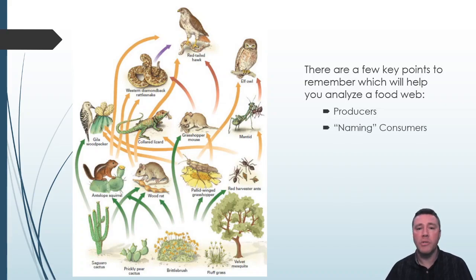Some consumers can be classified differently based on what they eat. The grasshopper mouse, for example, consuming brittle brush makes it an herbivore and a primary consumer. But sometimes a grasshopper mouse eats pallid-winged grasshoppers, making them carnivorous secondary consumers. On the other hand, the antelope squirrel is always an herbivorous primary consumer since all it eats from are prickly pear cactus and brittle brush.